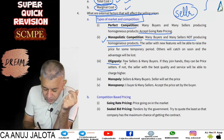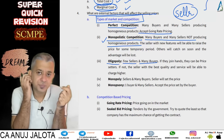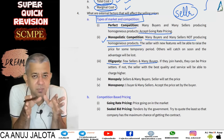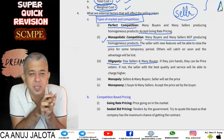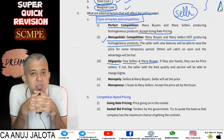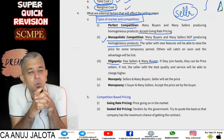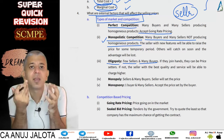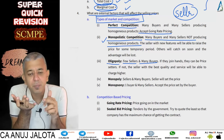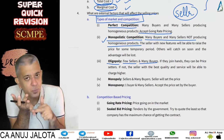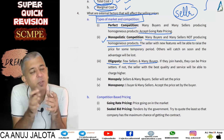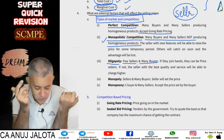In oligopoly there are few sellers and many buyers. If the few sellers team up, they can raise prices. If they don't team up, the seller with the best product and best service will ultimately win the battle and can charge higher prices.